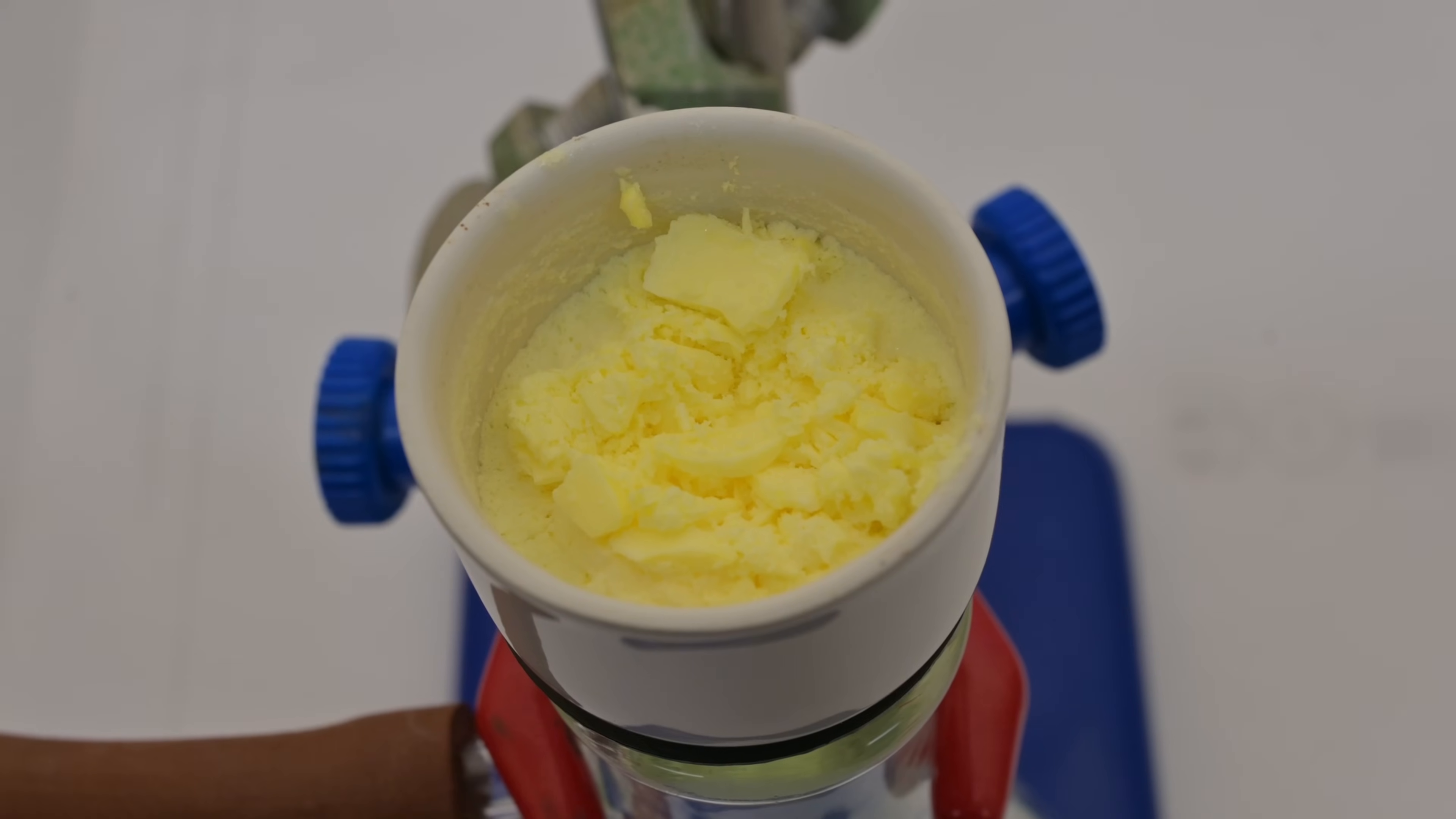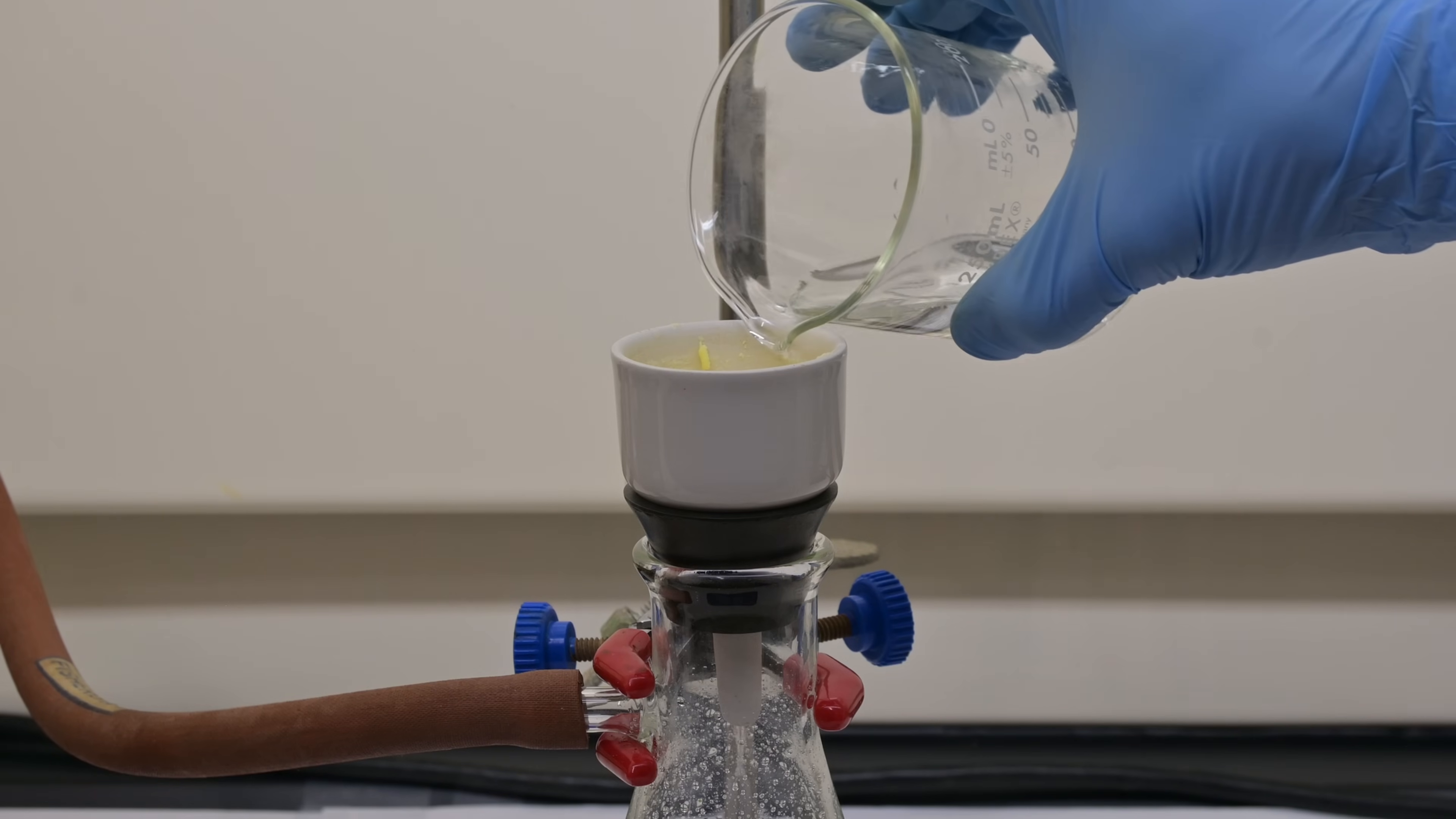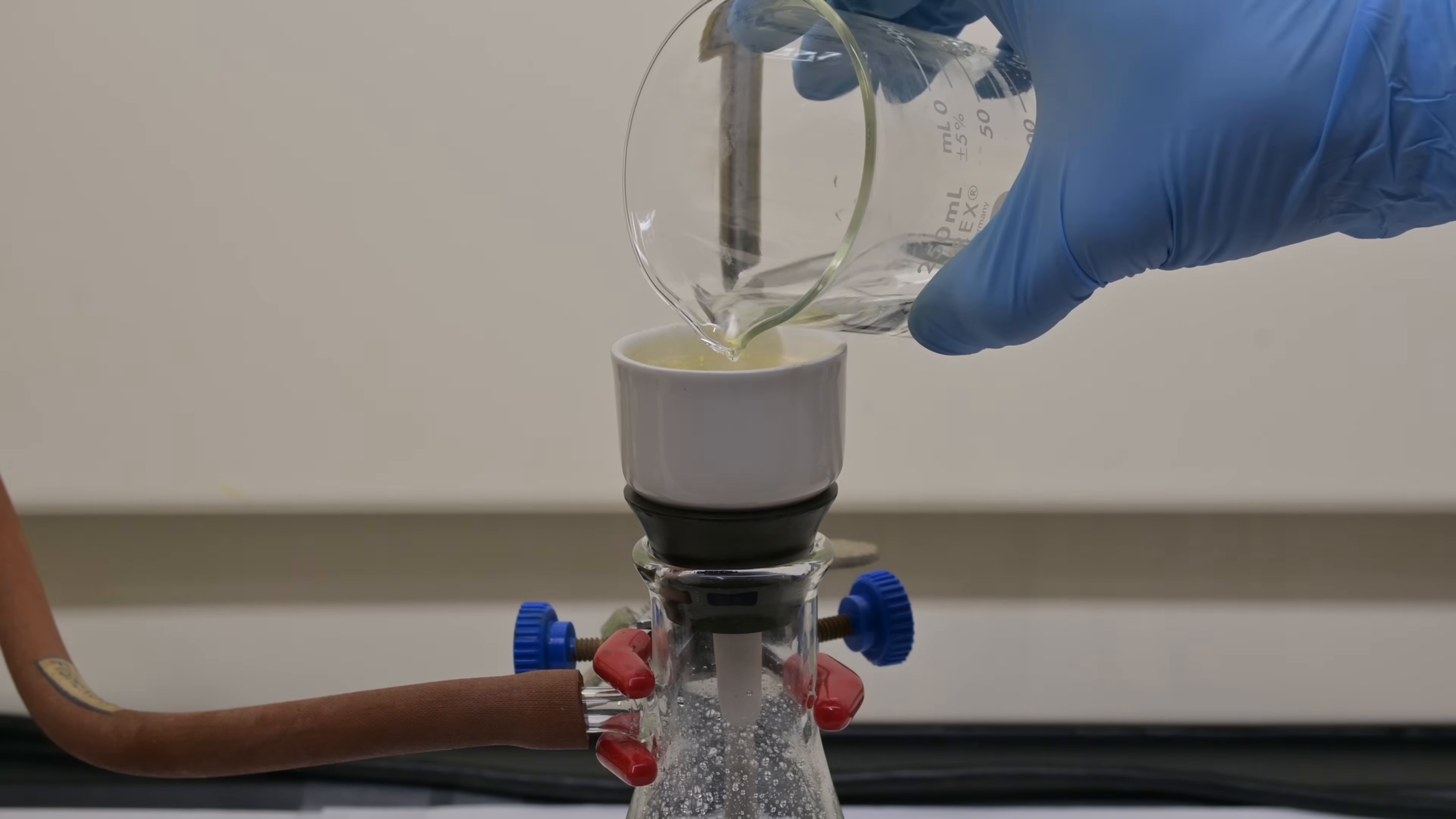Next, we need to collect our product. To do this, we set up a suction filtration apparatus and filter the yellow benzil crystals, washing thoroughly with methanol or alternatively 75% aqueous ethanol. This step helps remove any impurities that might have adhered to the crystal surfaces.